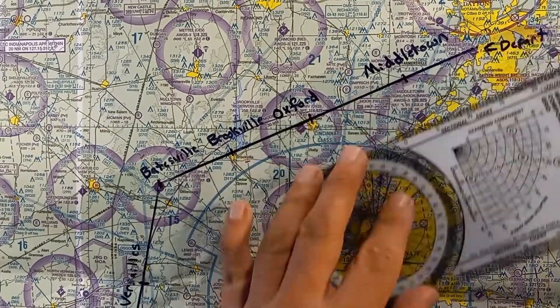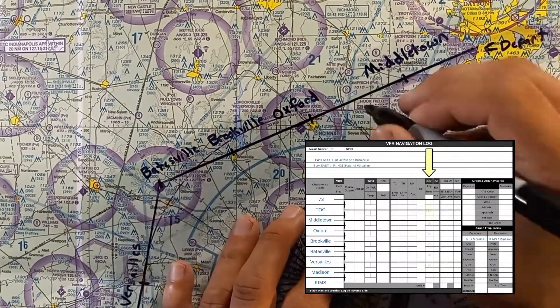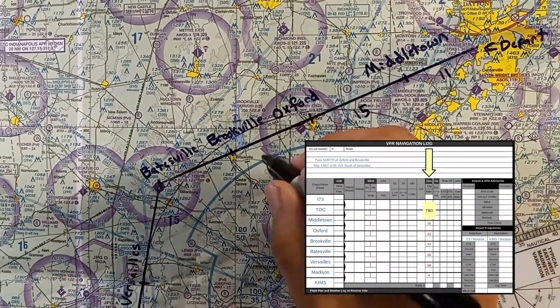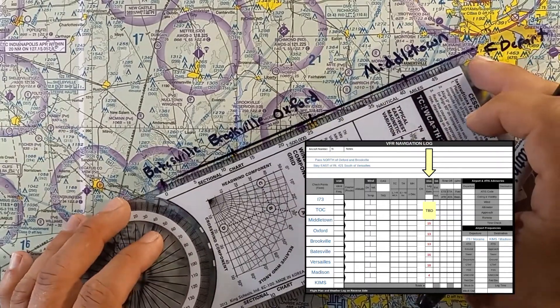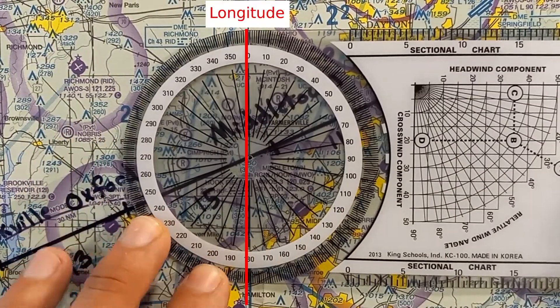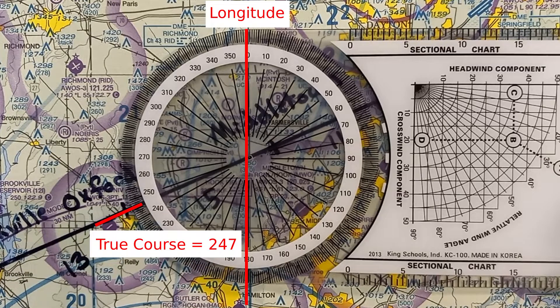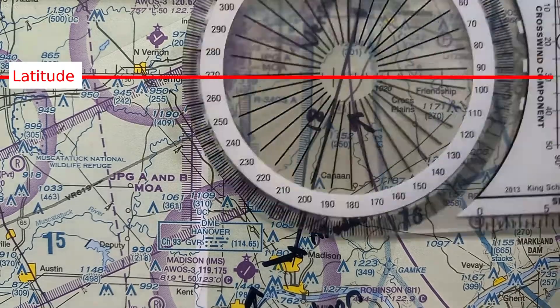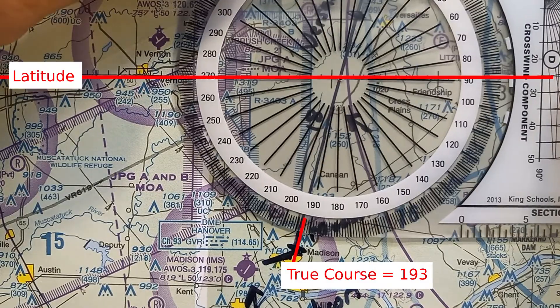Next, we use the sectional nautical mile side of our slide rule to figure out the distance between each checkpoint. We write those distances on the sectional and plug them into our nav log. We align the compass rose from our slide rule with a line of longitude, and then read our true course. If our course is mostly north-south, we can also use a line of latitude.